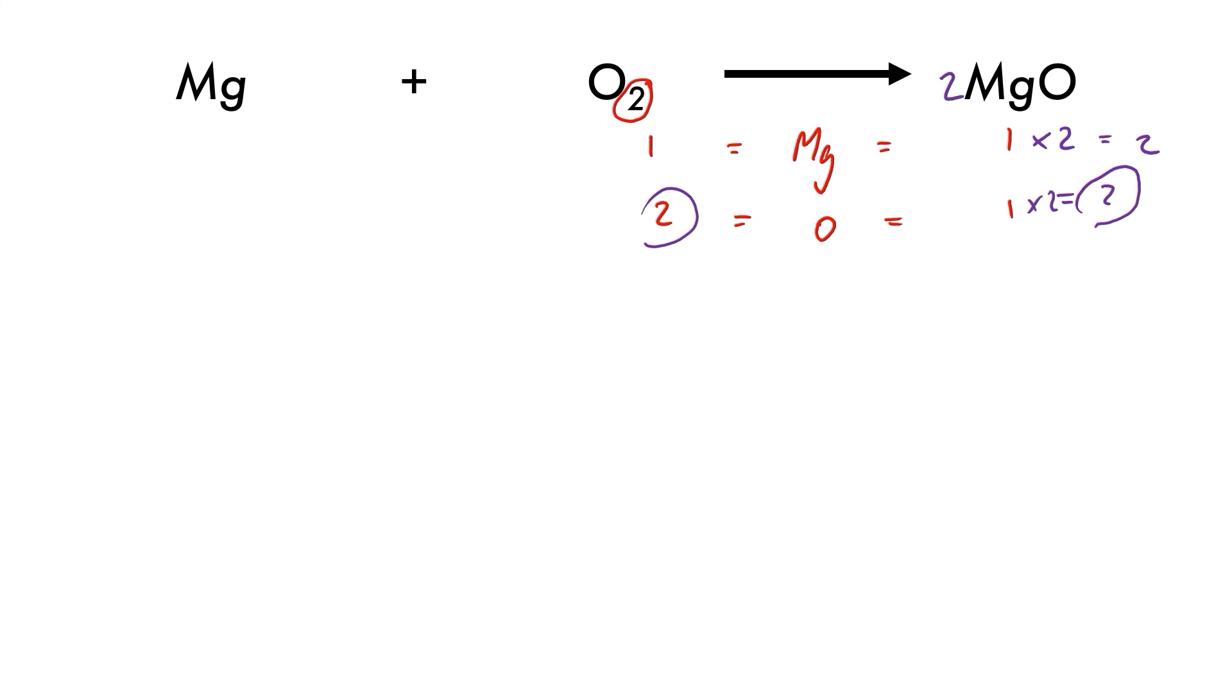We have two on two. So the easiest thing to do is simply multiply the number of magnesiums by two to get us two magnesiums. So two magnesiums plus one oxygen molecule gives us two magnesium oxides. And that's how we would balance this chemical equation.